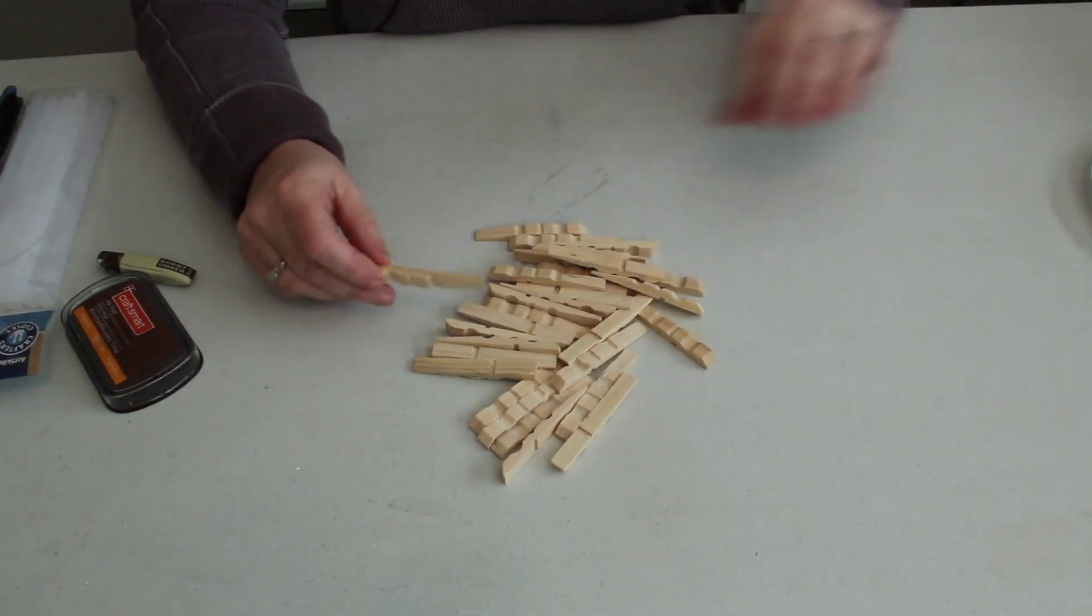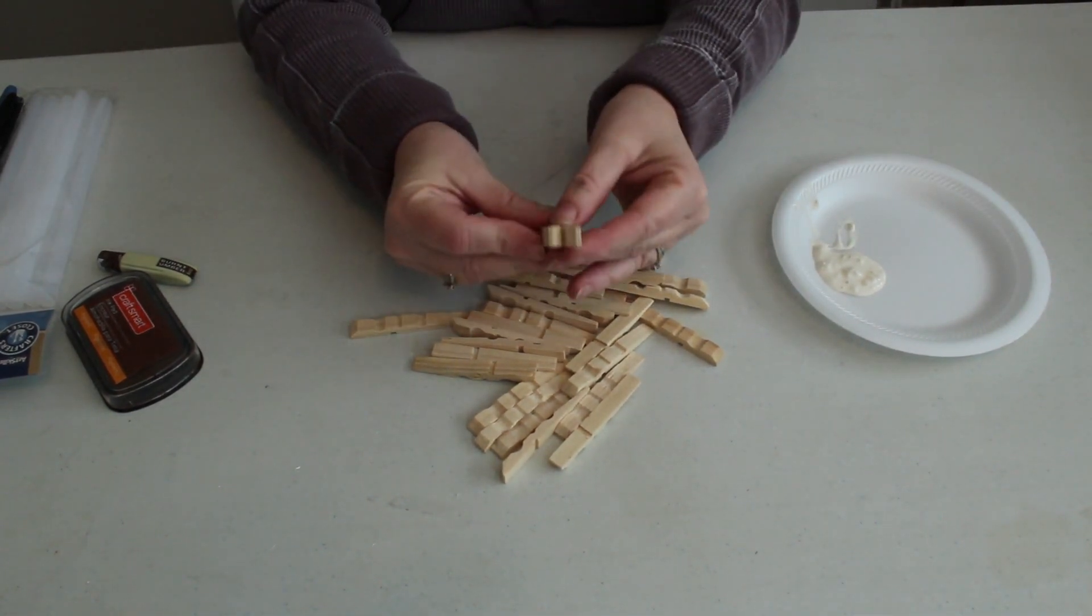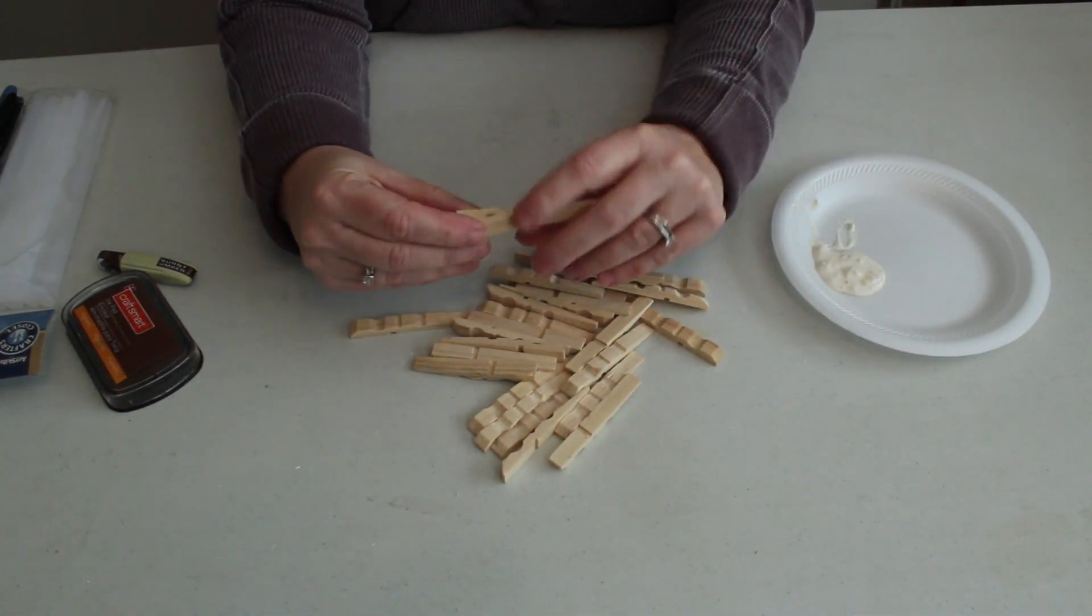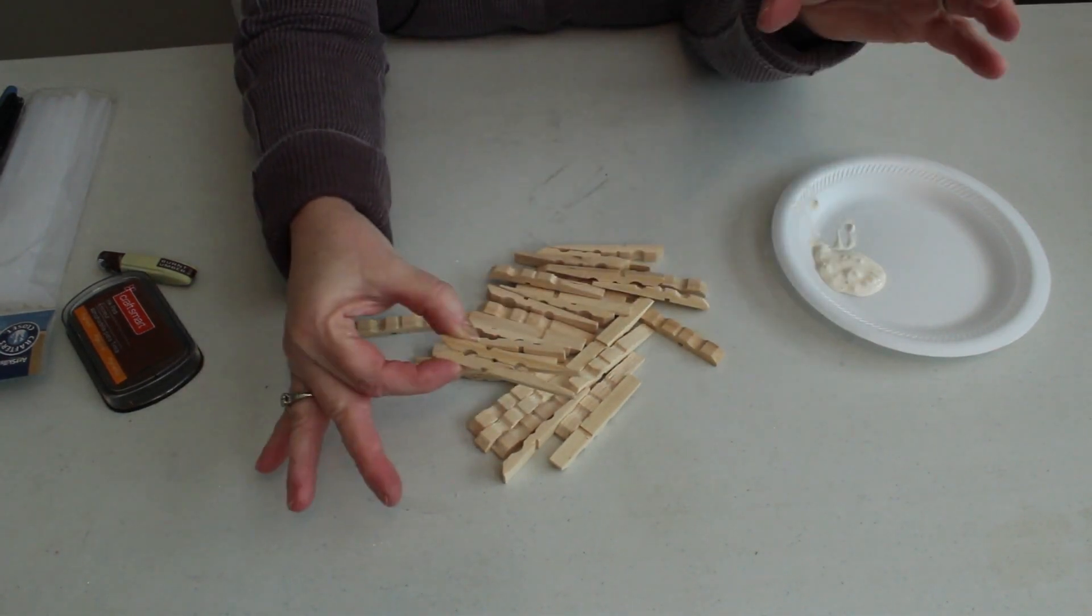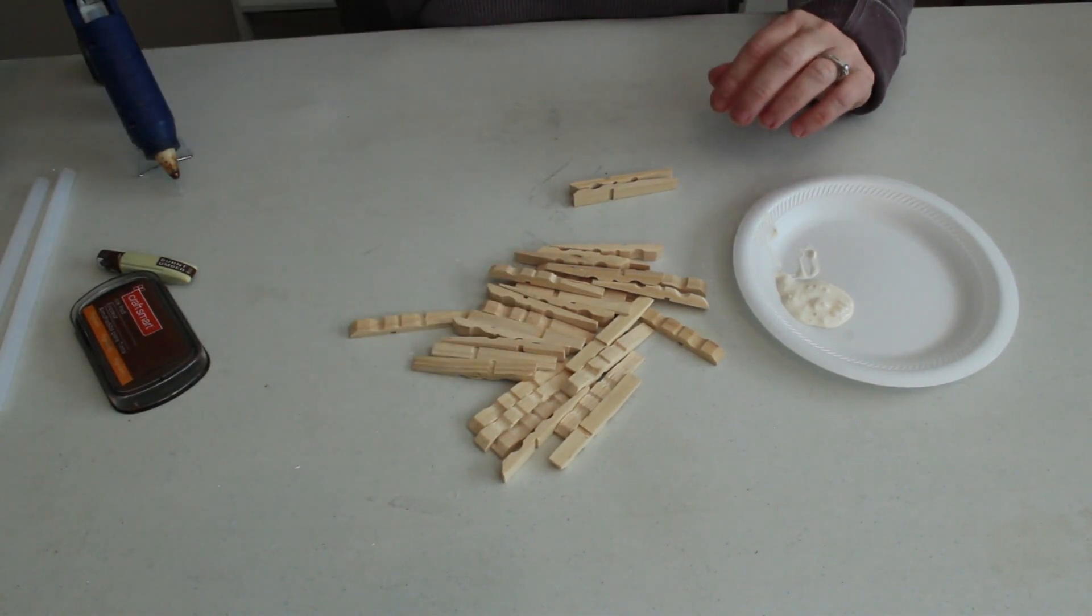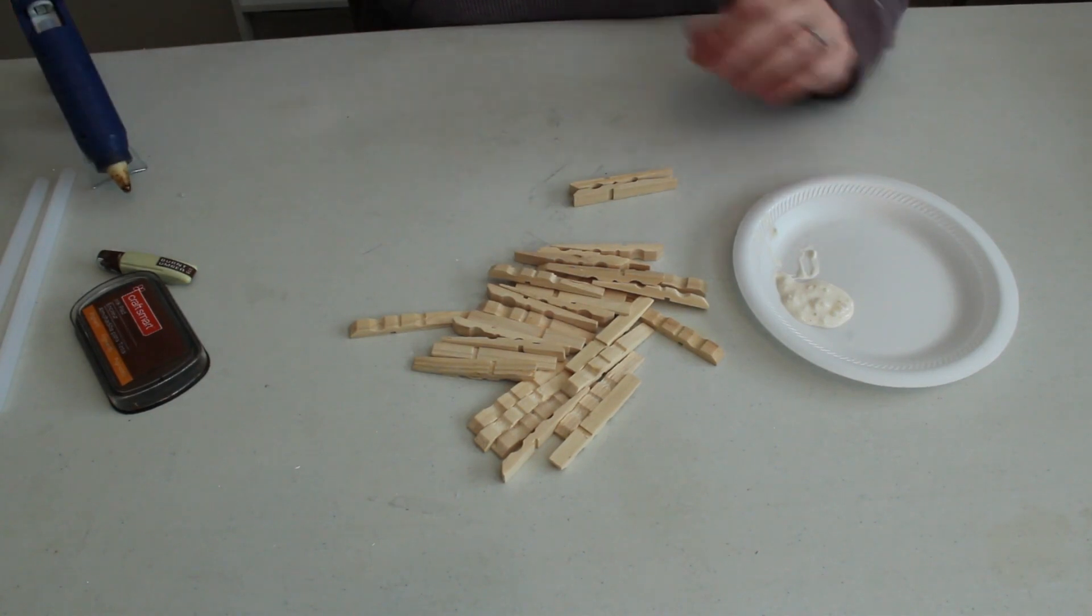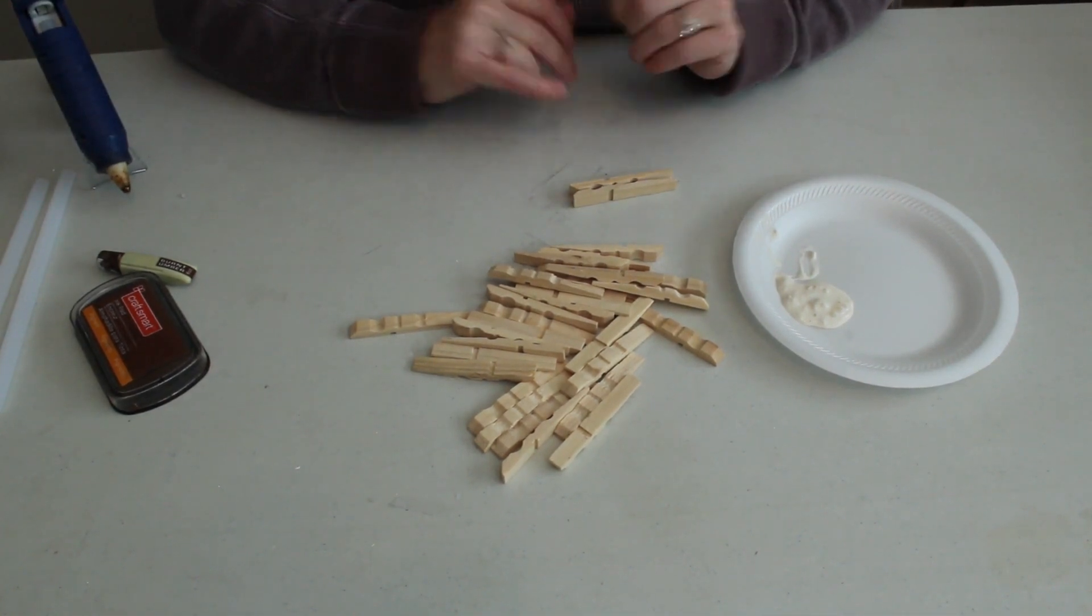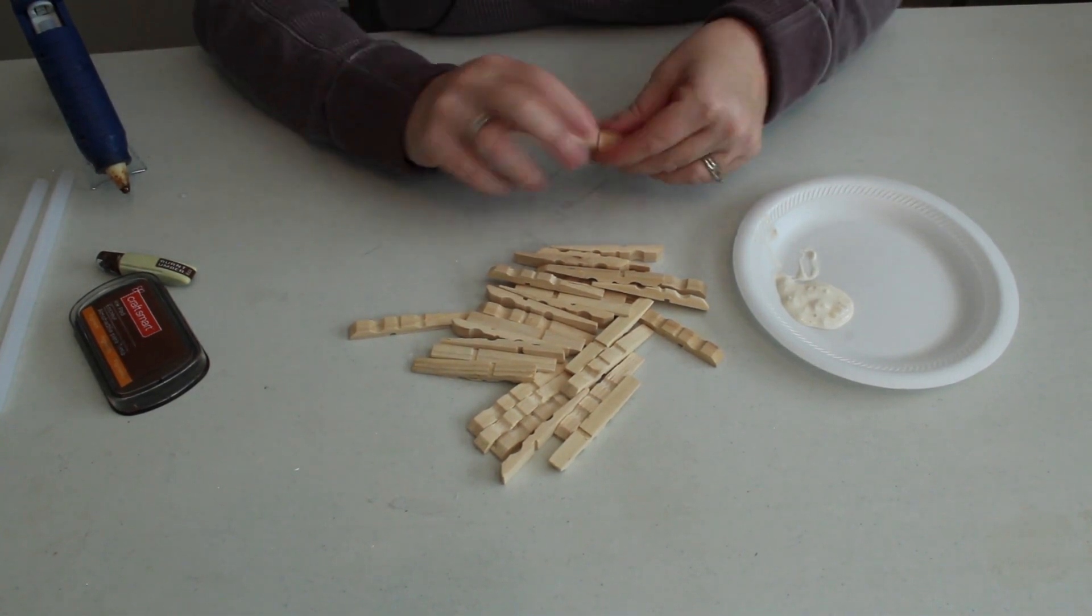So the next thing I need to do is glue my pieces together. I want to glue them together just like they were when they had the spring in them but they're going to fit closer together now that we took the spring out. I'm going to be using wood glue and I'm going to be using hot glue. The wood glue will give me the strong setting. The hot glue will give me the immediate hold. So let's glue these back together.